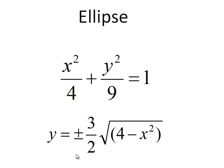Solving for y, the upper half is positive 3 halves times the square root of 4 minus x squared. And y will be negative when it equals minus 3 halves times the square root of 4 minus x squared, thus giving us the curve underneath the x axis.